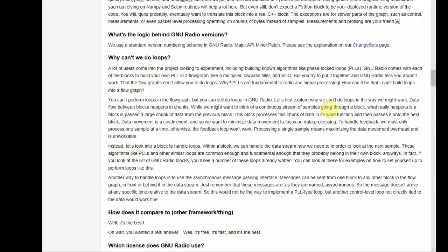As far as a phase lock loop is concerned, we cannot implement it in GNU radio companion. And the answer is given on the GNU radio page itself. So if you go here, you will find this in FAQ. Why can't we do loops? A lot of users come into the project looking to experiment, including building known algorithms like phase lock loops. GNU radio comes with each of the blocks to build your own PLL in a flow graph like Multiplier, Lowpass Filter and VCO. So all the building blocks are there. But you try to put it together and GNU radio tells you it won't work, that the flow graphs don't allow you to do loops. Why? PLL is fundamental to radio and signal processing. How can it be that I can't build loops into a flow graph?